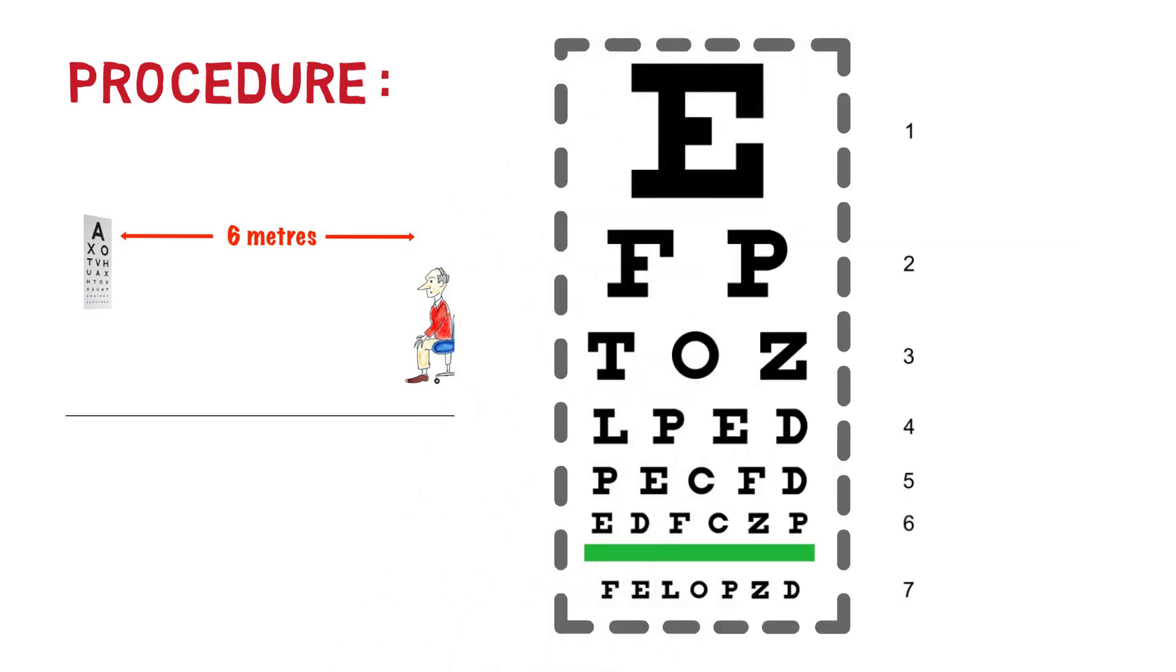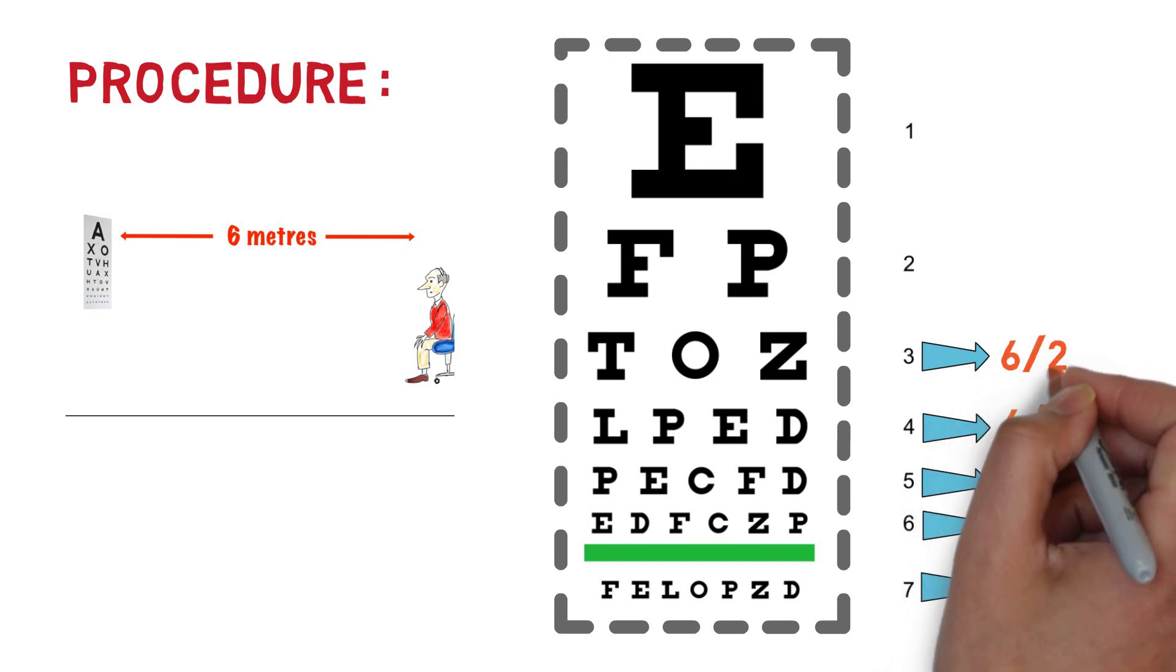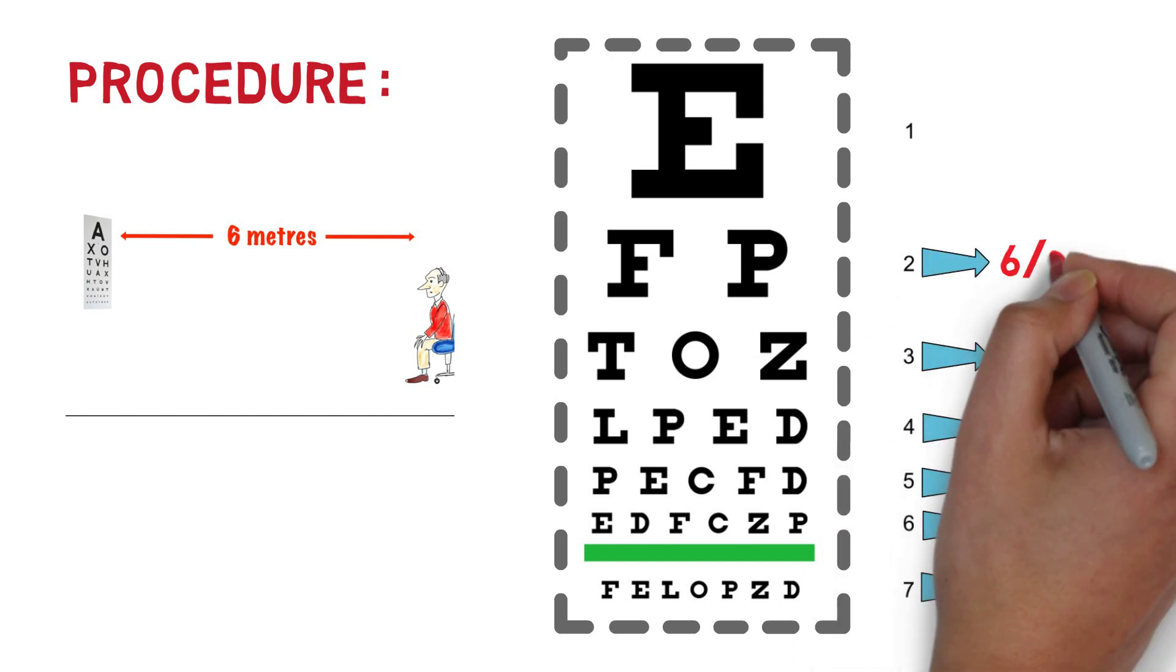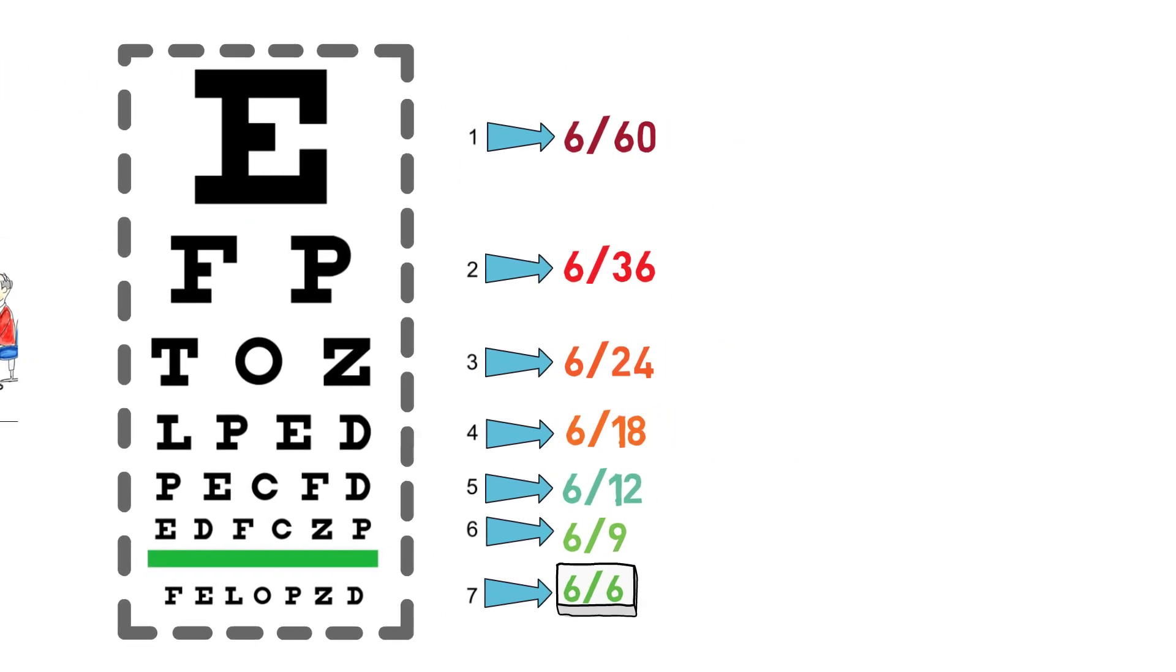When the patient is able to read up to the last line, the visual acuity is recorded as 6x6 which is the normal visual acuity. Similarly, depending upon the smallest line which the patient can read from the distance of 6 meters, his vision is recorded as 6x9, 6x12, 6x18, 6x24, 6x36 and 6x60 respectively.